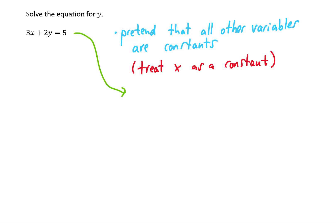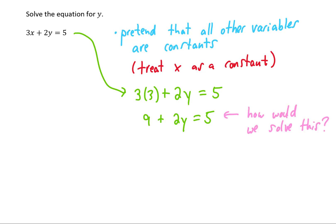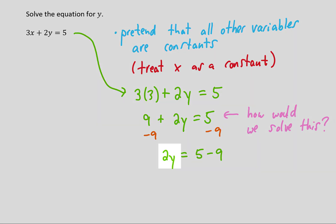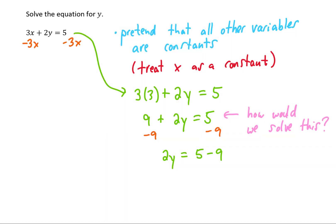We can make up a similar equation to guide our thinking — for example, if x equals 3 then the equation becomes 9 plus 2y equals 5. To solve, we'd subtract 9 from both sides to isolate 2y. Applying that plan to the original equation means subtracting 3x from both sides. The 3x's on the left cancel, leaving 2y equals 5 minus 3x.